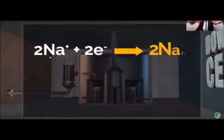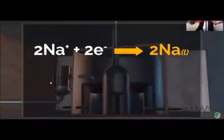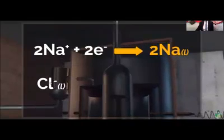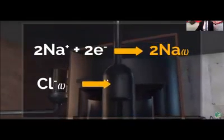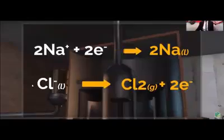The reaction is: 2Na+ + 2e- → 2Na in liquid state. At the anode, the Cl- ions are oxidized: 2Cl- → Cl2 + 2e-.